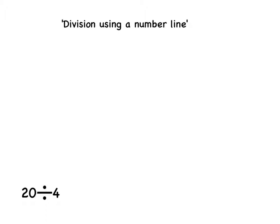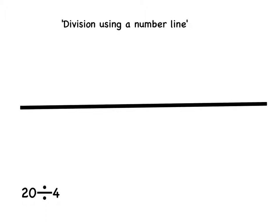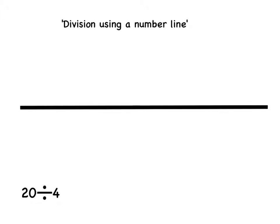To solve this you must first of all use a ruler to draw your number line. Remember the biggest number always goes on the right hand side. In the division, 20 is the bigger number, so write this on the right hand side. For division with a number line, 0 will go on the left because you are going to count up from 0.